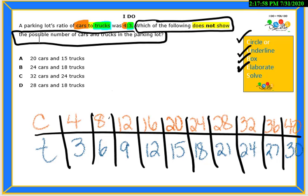Then, compare the ratios created to the answer choices provided. A, 20 cars to 15 trucks. So, we look for 20 and we have 15 trucks.